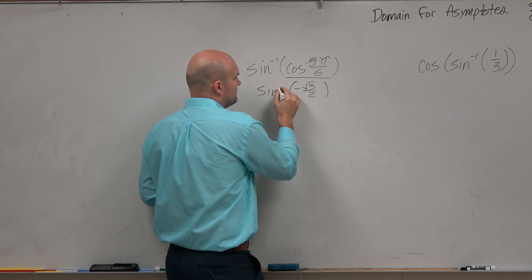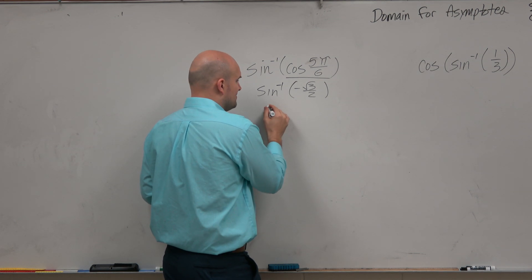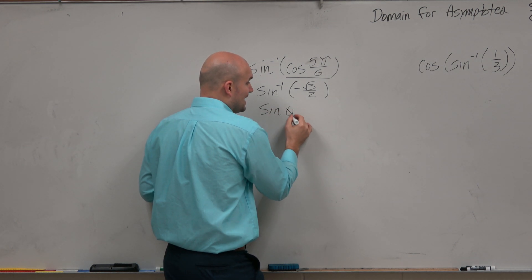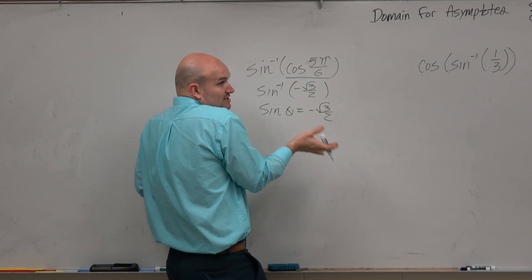So now we're just going to figure out what is the sine inverse of negative square root of 3 over 2. And again, what we're asking ourselves is the sine of what angle equals negative square root of 3 over 2? So now it's not the cosine. Now we're talking about the sine.